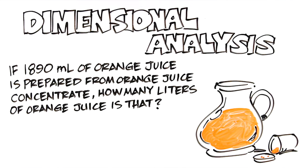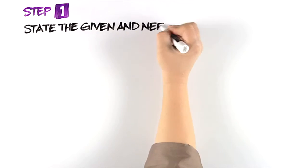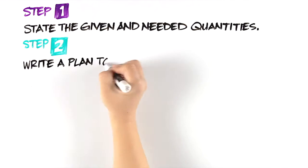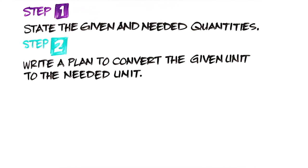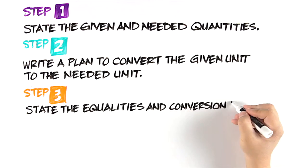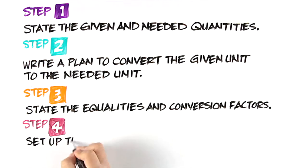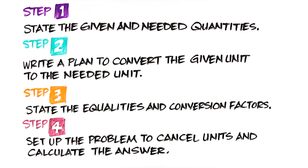In order to solve this problem, you use the problem solving steps explained in your textbook. Recall that the four steps are: state the given and needed quantities, write a plan to convert the given unit to the needed unit, state the equalities and conversion factors, and set up the problem to cancel units and calculate the answer.